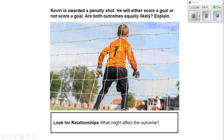Let's go over our first one. It says Kevin is awarded a penalty shot. He will either score a goal or not score a goal. Are both outcomes equally likely? What might affect the outcome? He's either going to make a score or he's not going to make a score. Based on his skill level of hitting the ball into the net and the goalie's skill level of deflecting are the only two things that might affect the outcome.